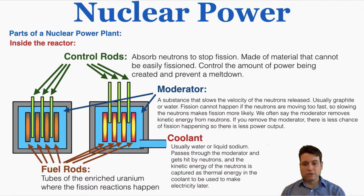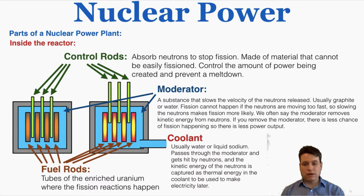A moderator is a substance that slows the velocity of neutrons released from the reactions. This seems counterintuitive — the moderator sounds like it would prevent energy release — but the opposite is true. By slowing down neutrons, moderators actually make more fission reactions more likely, because neutrons moving too fast through an atom can't fuse to it to make uranium-236, so fission cannot happen. We need a moderator to allow for more nuclear reactions. Moderators are usually made of graphite or water, and removing the moderator reduces the chance of fission and lowers power output.